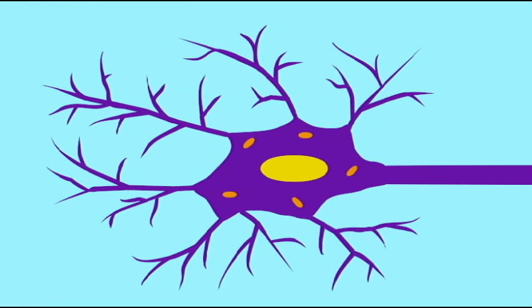In most neurons, the dendrites are highly branched processes, which allow a neuron to monitor a very large area for stimuli.